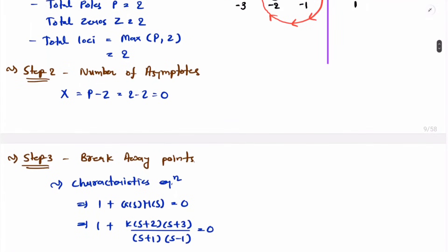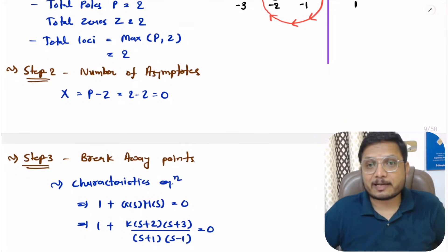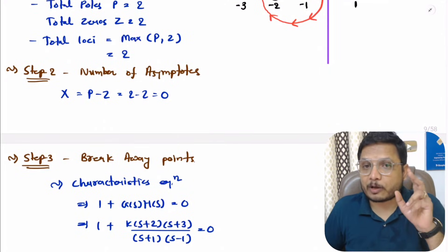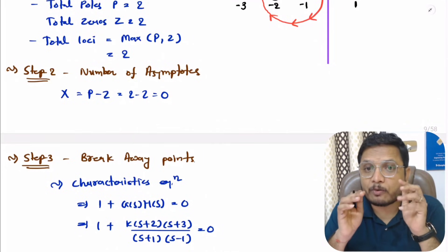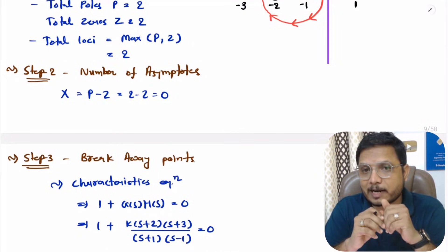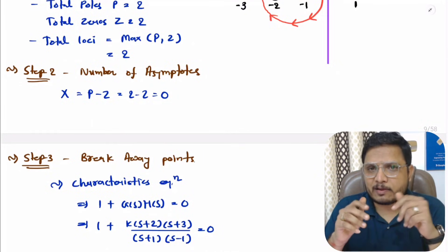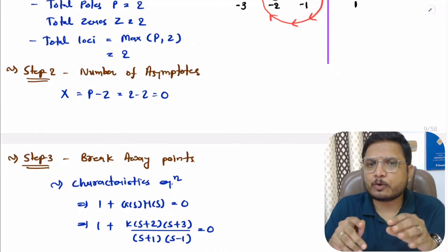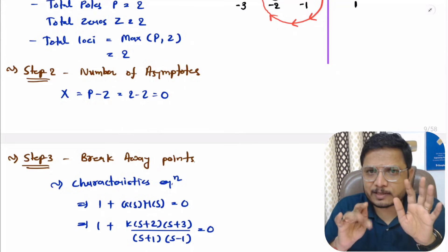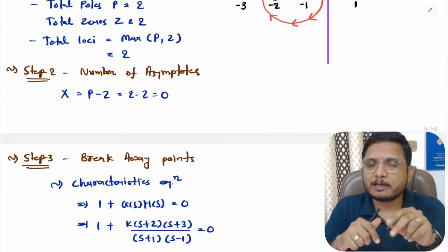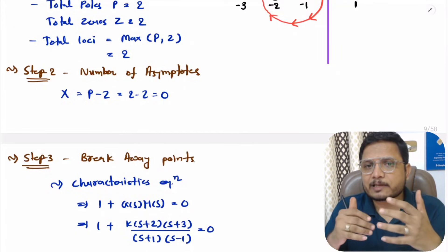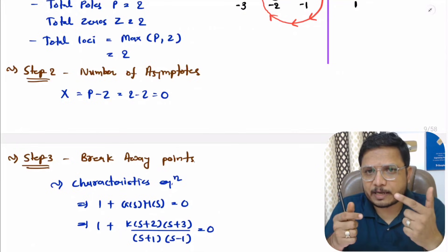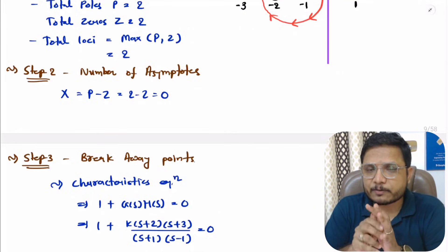In this example we followed only three steps, as it is not necessary to compute all steps for every root locus problem. You need to understand how to plot root locus based on the specific problem. I will be solving a total of 11 questions; this is just the second one. In the third question I will increase the complexity a bit. Thank you so much for watching this video.